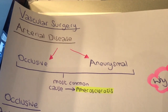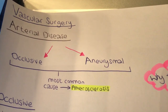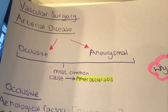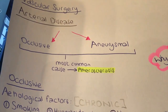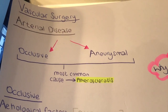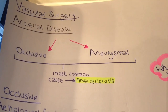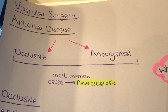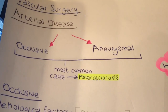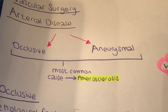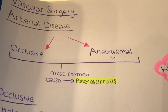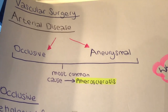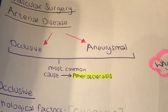Today we're going to be talking about arterial disease in vascular surgery. The main two types are occlusive and aneurysmal, and the most common cause of both is atherosclerosis. It causes occlusion because of plaque buildup and thrombosis on top of that, and in aneurysmal disease it's due to the degenerative effects that atherosclerosis brings along with it.